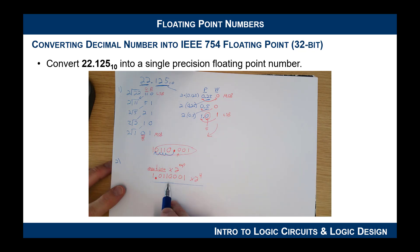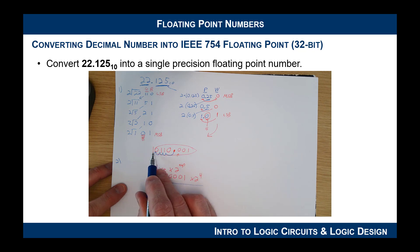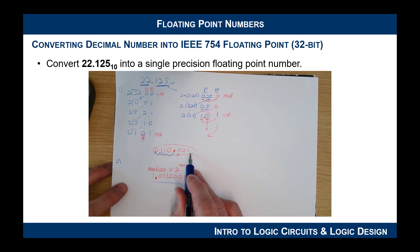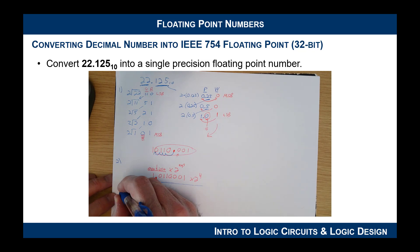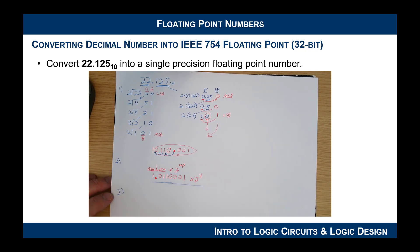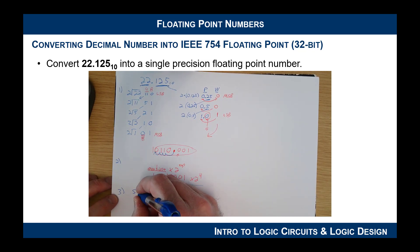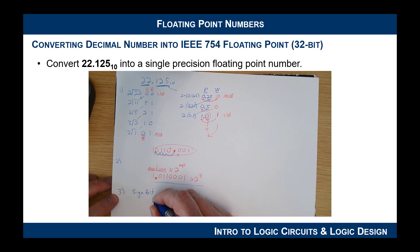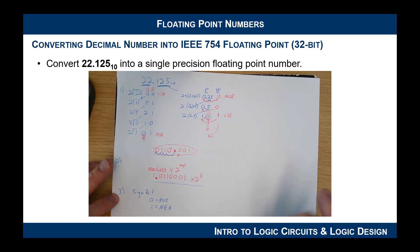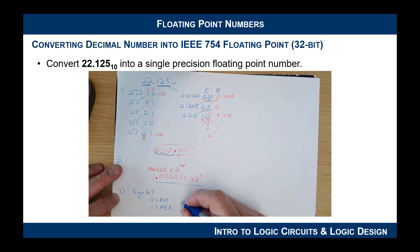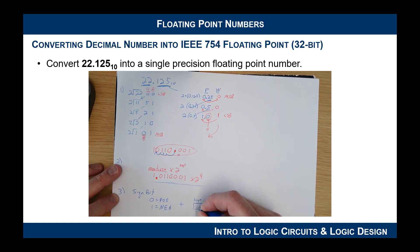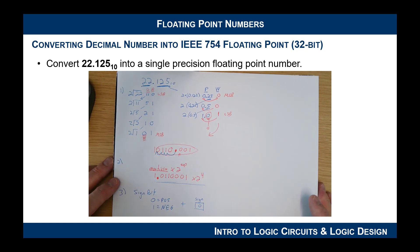Step three is the easiest one — determine the sign bit. The sign bit is 0 for positive and 1 for negative. There's no negative sign on our number, so it's positive, meaning the sign bit is 0.